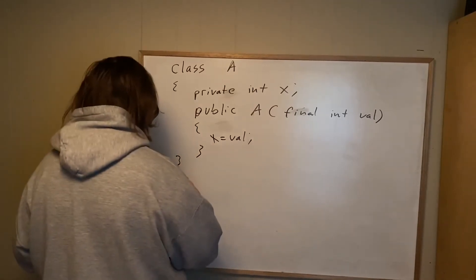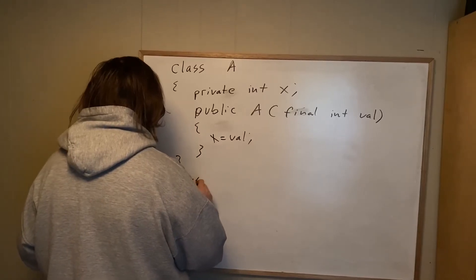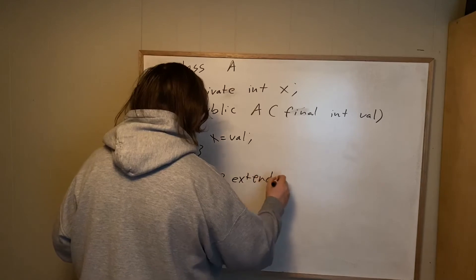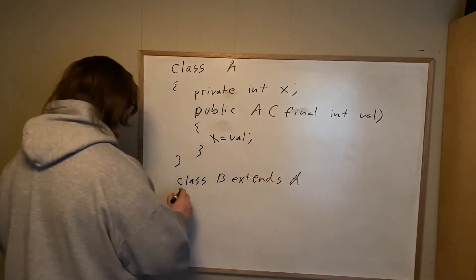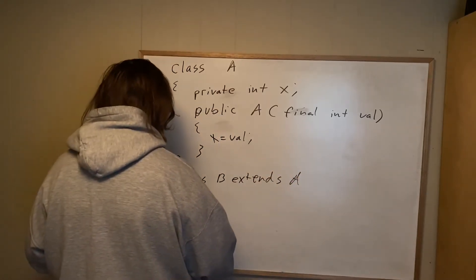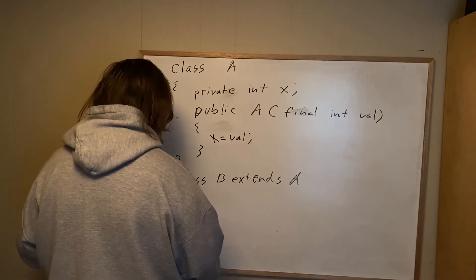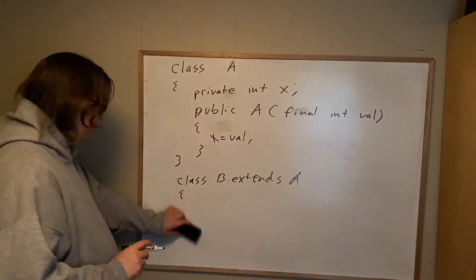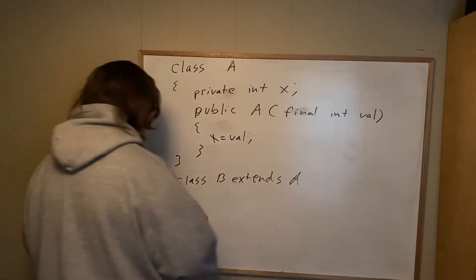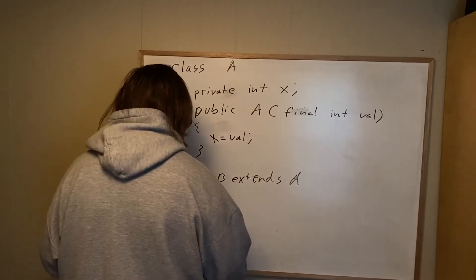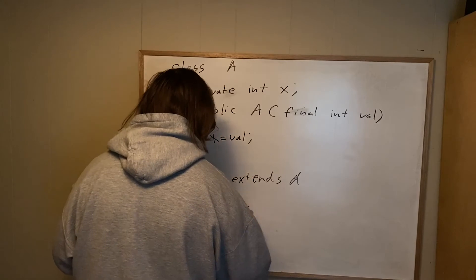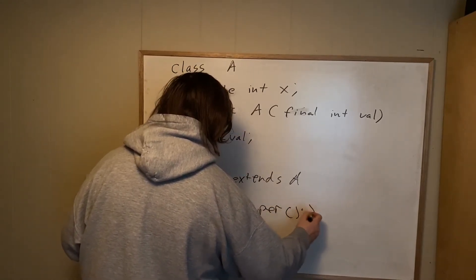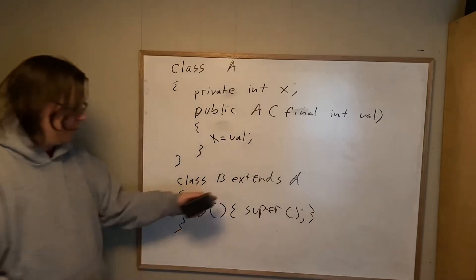Similarly, B extends A. And if this is all we provided, nothing else, we have a problem. Because the compiler is going to be nice and give us a constructor. Every class must have a constructor. I'm running out of room. So I'll just do it like this. And that is what the constructor is going to look like. It's going to take no parameters.